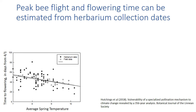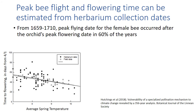Combining these records with long-term temperature records revealed that flowering time decreases — orchids flower earlier — as spring temperature gets warmer. Looking at the historical bee records, peak female flying date occurred after the orchid's peak flowering date in 60% of years from 1659 to 1710. In the past, most flowers were reaching peak flowering before the females came out, which is favorable — it means the orchid flowers before males have real females to mate with, so males will pollinate them.